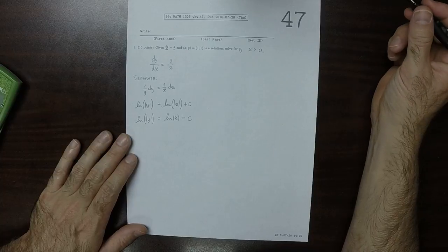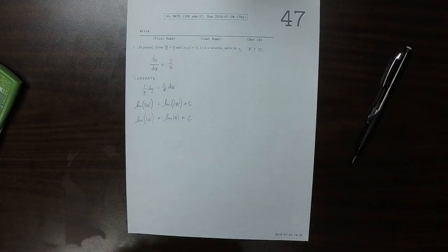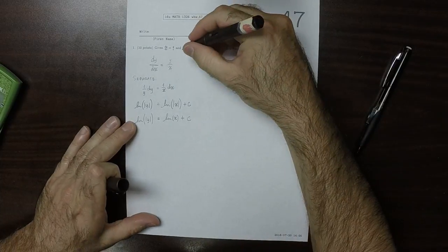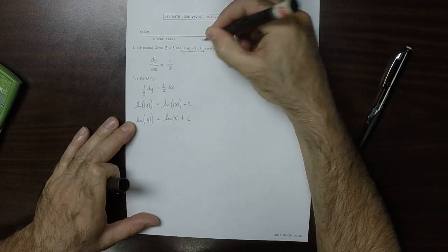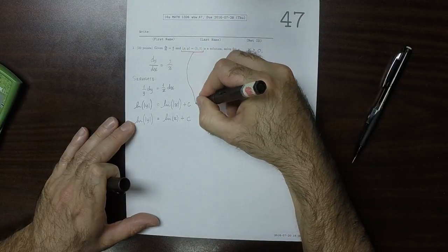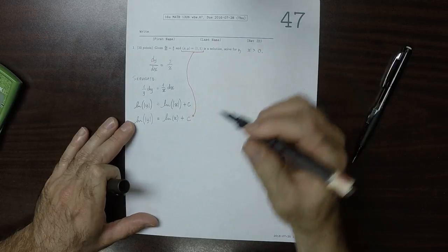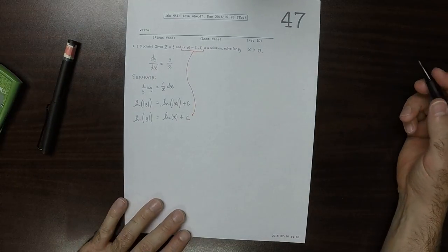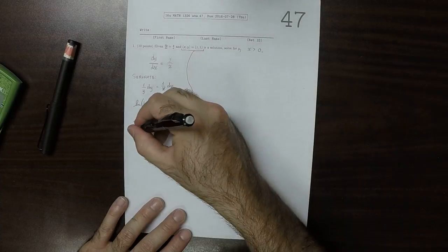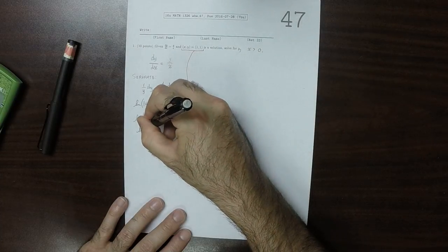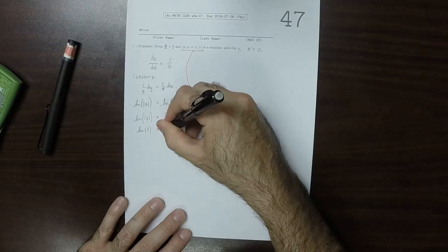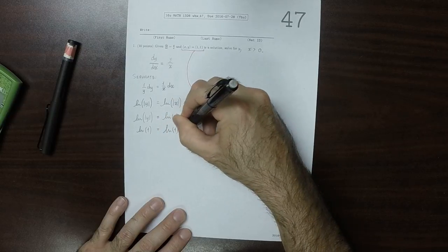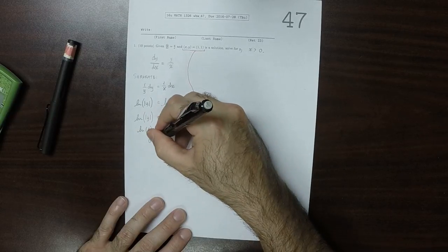So now we can determine c by using the initial data. We know that when we plug in y is 1 and x is 1, that should be a solution. So log of 1 is log of 1 plus c, and that tells us that c is 0.